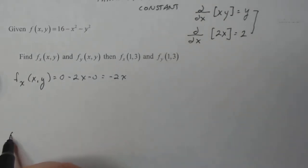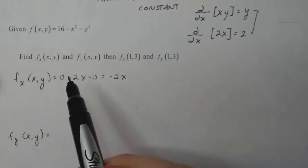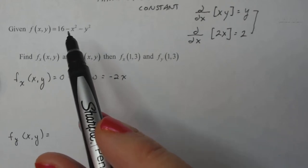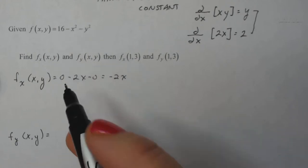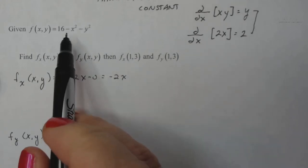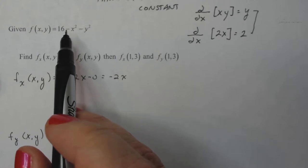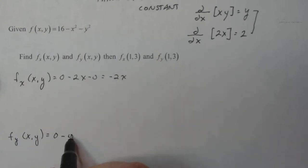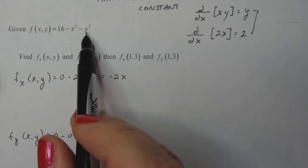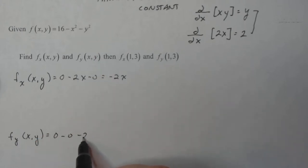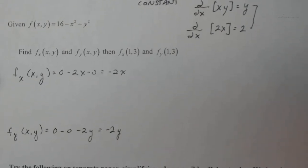If I do the same thing for f sub y of xy, I have to think now of x as a constant. So thinking of x as a constant, that means that the derivative of 16 is zero. The derivative of minus x squared, well, that's a constant too. So that's minus zero, or plus zero, and the derivative of y squared is 2y, minus 2y.